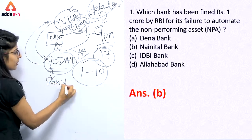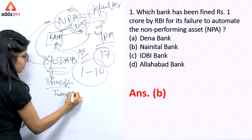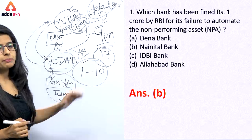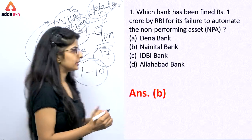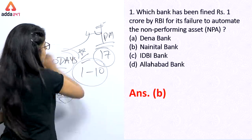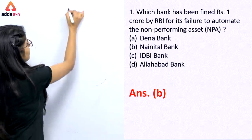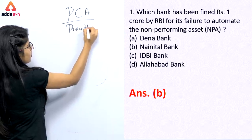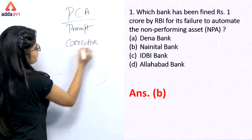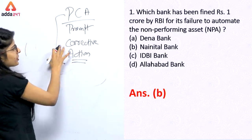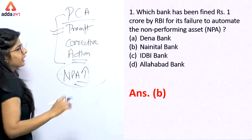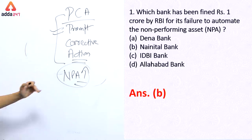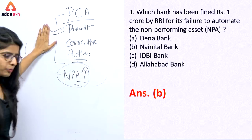If a bank has a non-performing asset, the NPA level increases. RBI can put Prompt Corrective Action (PCA) on a particular bank when the NPA level is high. Under PCA, the bank faces restrictions — it cannot give loans to new customers, make new recruits, or take on new customers. These are the terms and conditions imposed on the bank under PCA.